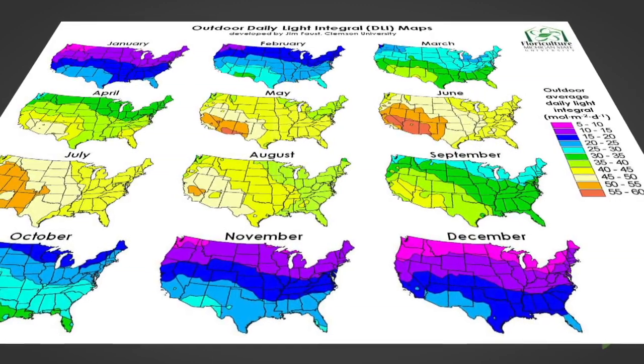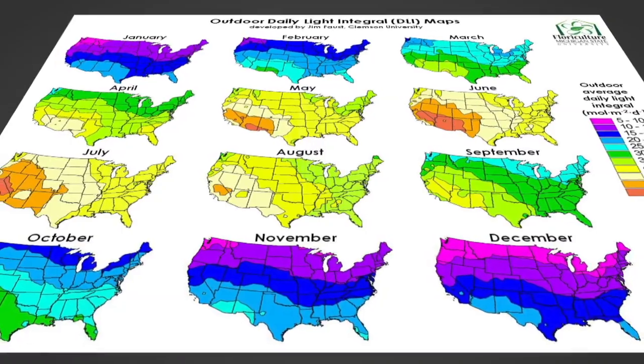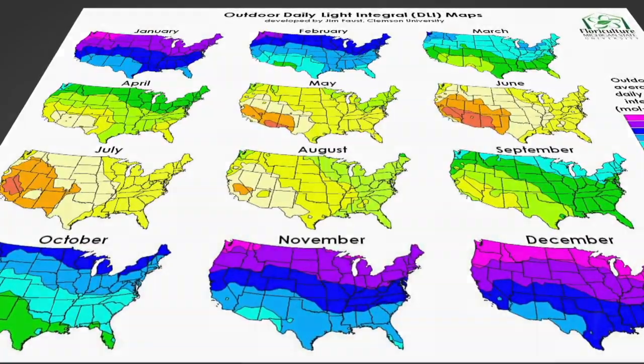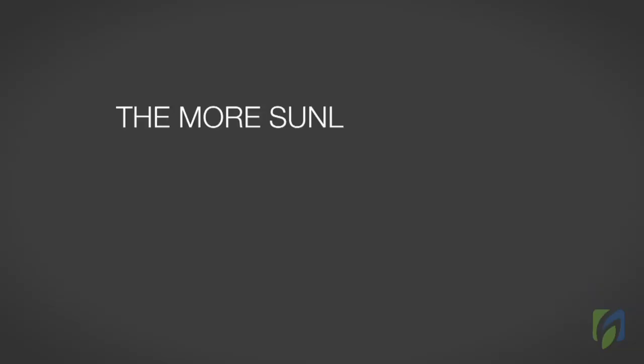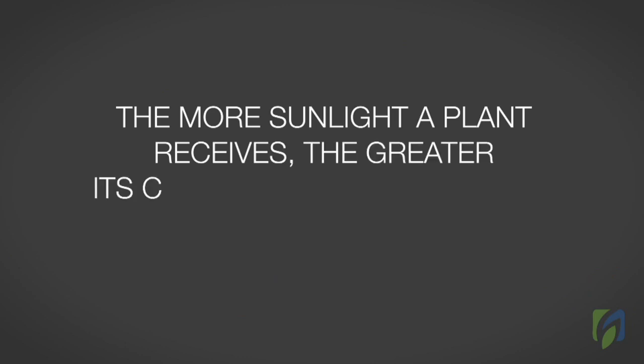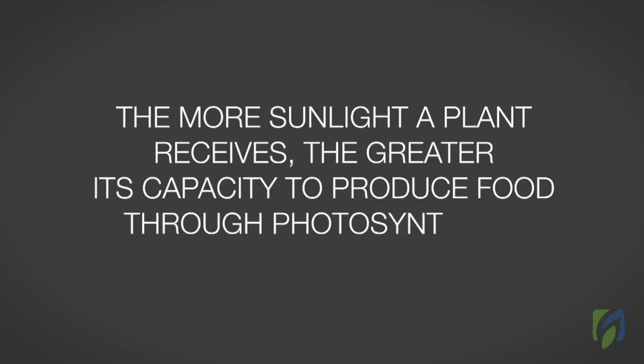The maximum amount of light in the northern hemisphere, which includes the United States, is present during summer months. Up to a point, the more sunlight a plant receives, the greater its capacity to produce food through photosynthesis.